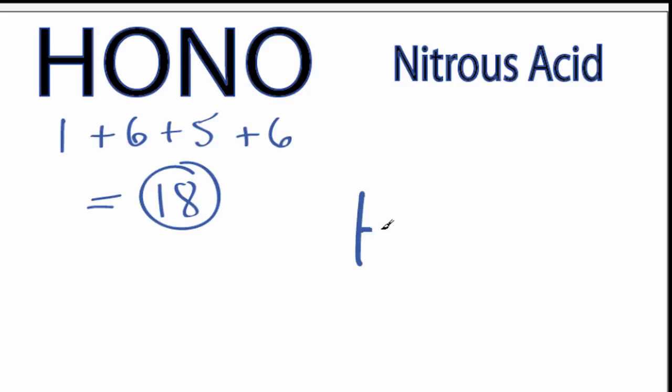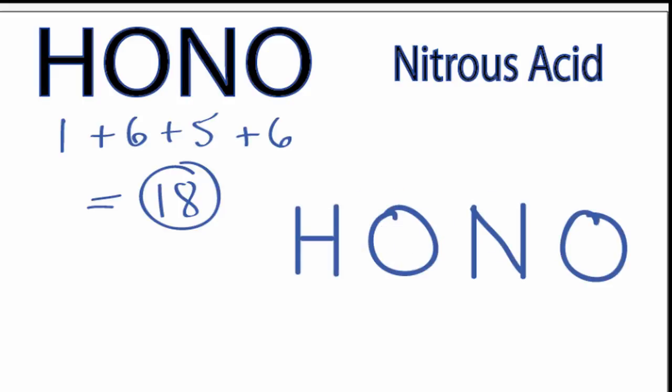We'll write the structure as it's given to us here in the chemical formula. We have a total of 18 valence electrons for the HONO Lewis structure. We'll put two between atoms to form chemical bonds.